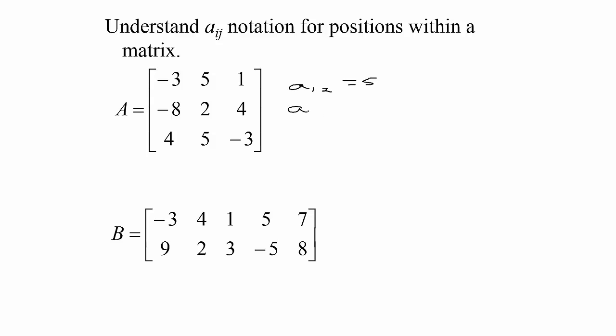The entry in the third row, second column would also be 5. The entry in the third row, third column would be negative 3.